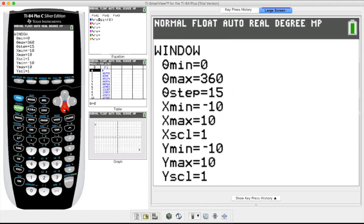We could see from doing it by hand that you never go past one. So let's go negative one to positive one. Keep your X scale at one. Y min negative one, Y max one, Y scale one.